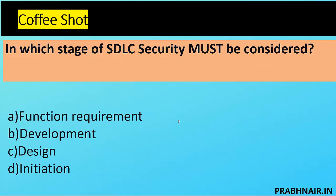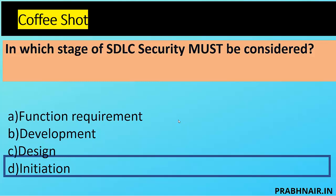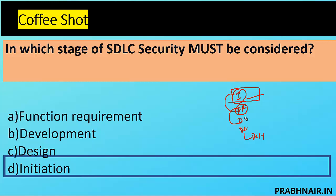If D is not available then A, if A is not there then C, and only then B. Following the SDLC: first step is initiation, then functional requirement, then design, then development, then deployment. If you fail to incorporate the security requirement in phase one, you move to phase two, but adding security later means going back to modify requirements and redesign — which is why we say security should be introduced as early as possible.